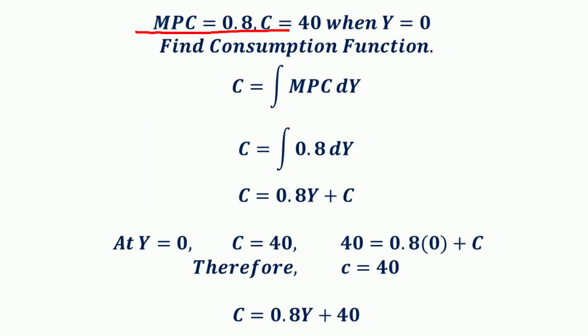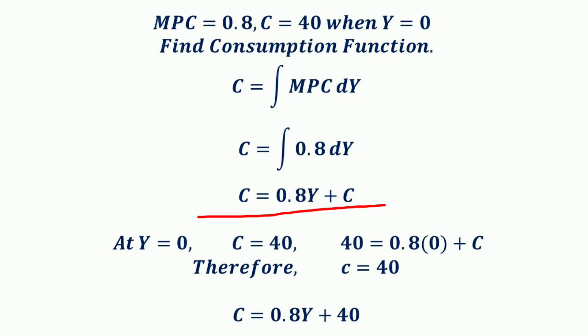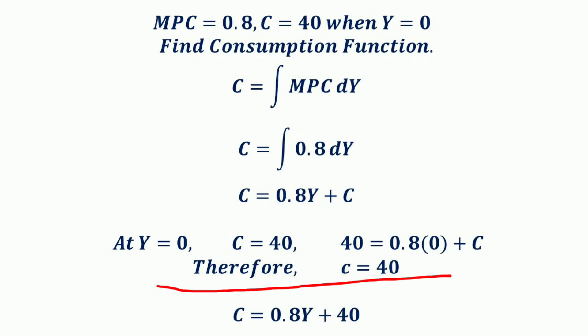Consider another numerical example where the marginal propensity to consume MPC = 0.8, and consumption C = 40 when Y = 0 — that is, even if income is zero there is autonomous consumption of 40. We want to find the consumption function. The consumption function is the integral of MPC with respect to Y: C = ∫0.8 dY = 0.8Y + C. Substituting Y = 0 and C = 40: 40 = 0.8(0) + C, so C = 40. Therefore, the consumption function is C = 0.8Y + 40.